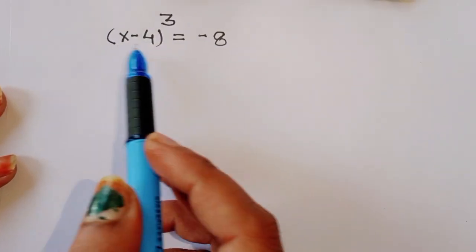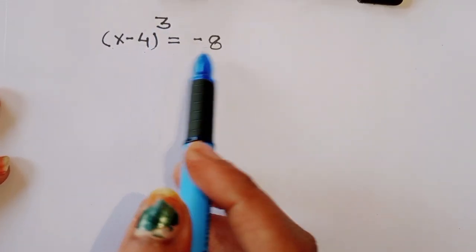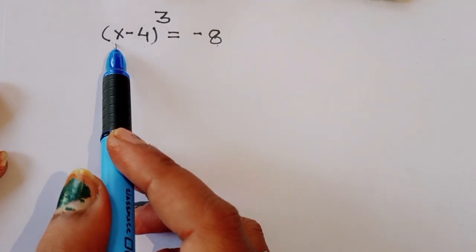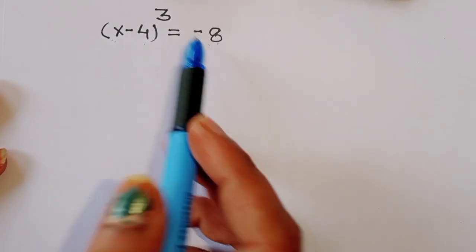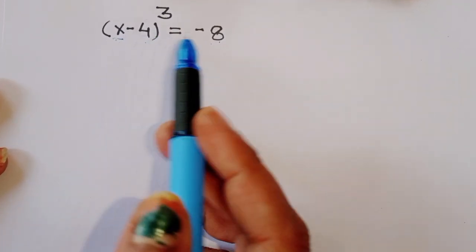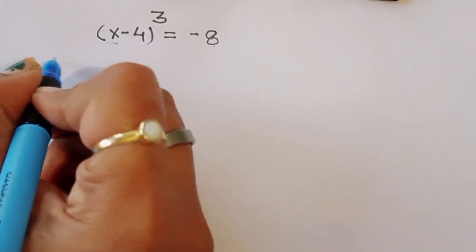The question is: given (x - 4)³ = -8, we have to find out the value of x. Let's see the solution.